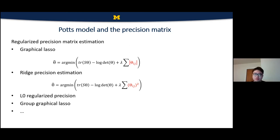In this work, we find that ridge precision estimation has the best performance like this. And we also tried other types, for example, L1, L0 regularization and also group graphical lasso.